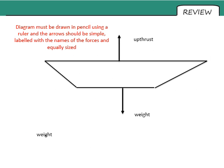So here is my excellent diagram of a boat. The boat that we were shown was floating. Which means that the forces of weight and upthrust are equal. We are now showing them with a single pencil line. Now admittedly mine is in pencil. But that wouldn't work very well on the computer. So your diagram must be drawn in pencil. It must be drawn using a ruler. And the arrow should be simple. And labelled with the names of the forces. As the boat is floating, they should also be equally sized arrows. If the weight arrow was larger, the boat would be sinking. If the upthrust arrow was larger, the boat would be out of the water.